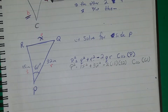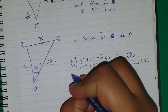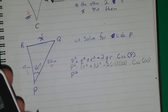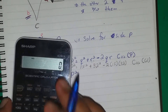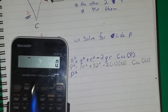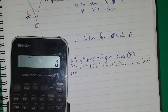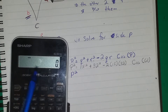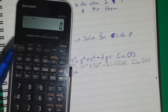At this point you can enter everything into your calculator. If your calculator displays the full expression at the top, enter: 15 squared plus 32 squared minus 2 times 15 times 32 times cosine of 61, then press equals. My calculator does not display the full expression, so I'll show how to enter the information step by step.